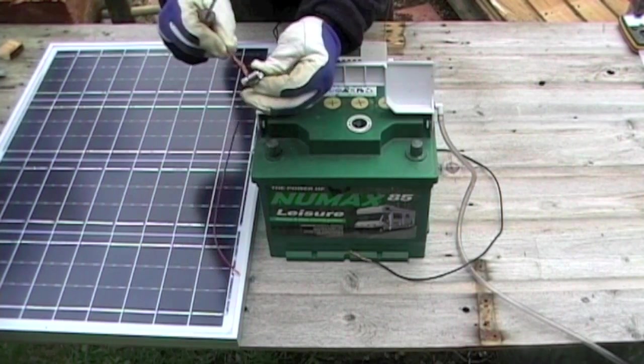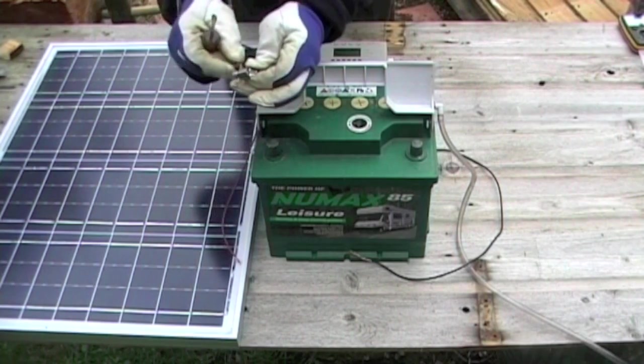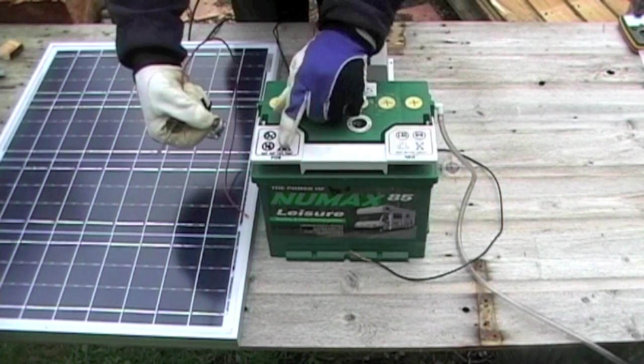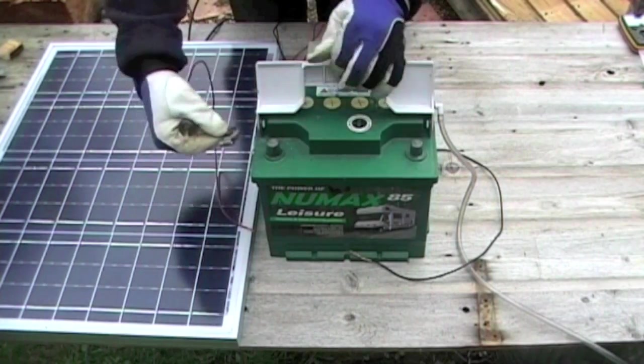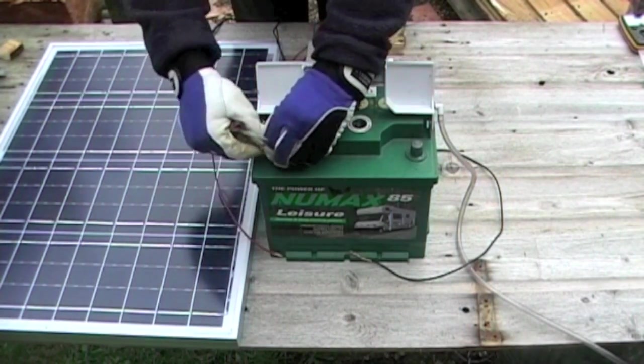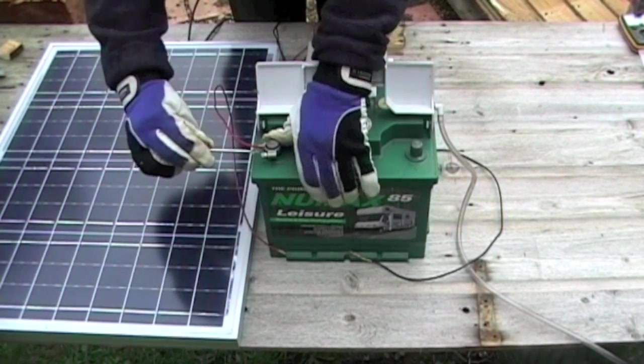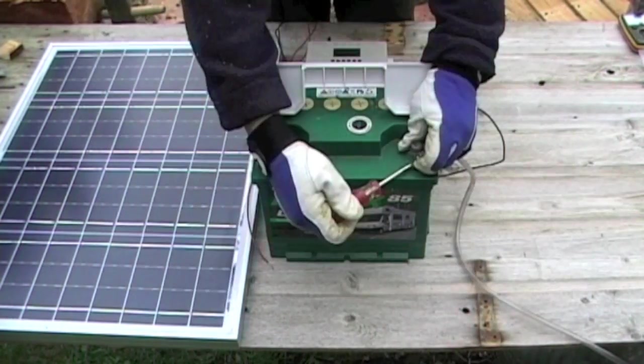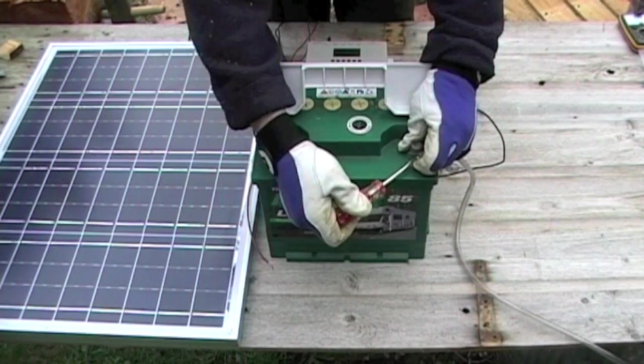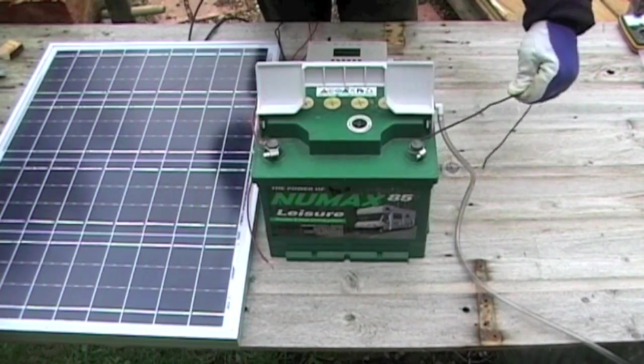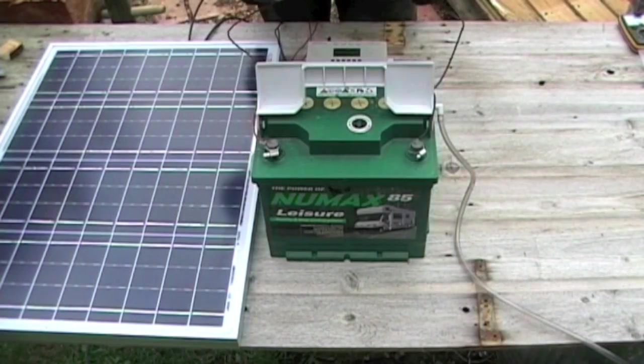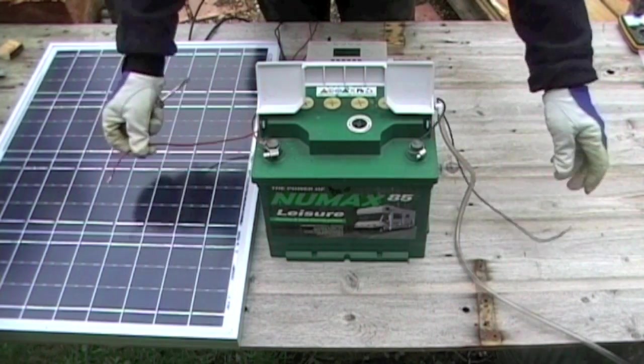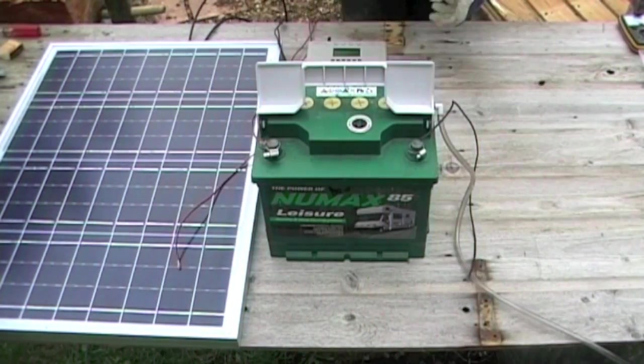Tuck the bare end of the wire inside. Double check that the red wire is going to the positive terminal. Then slip the jubilee clip over the terminal and tighten the screw. Then the same for the black wire on the negative terminal. So there are the two wires. I need to be careful they don't touch and short the battery out. I'll just move it out the way.